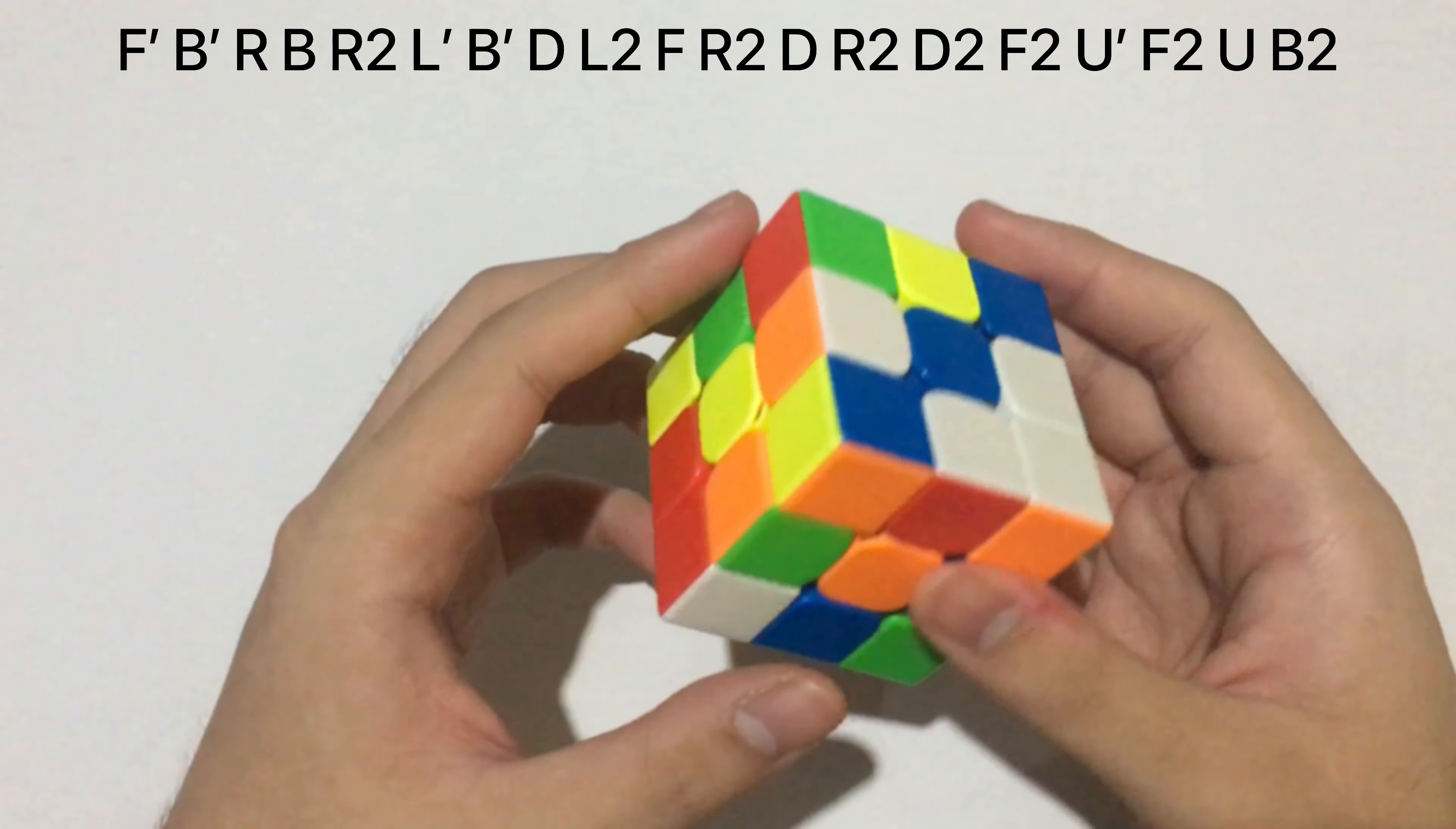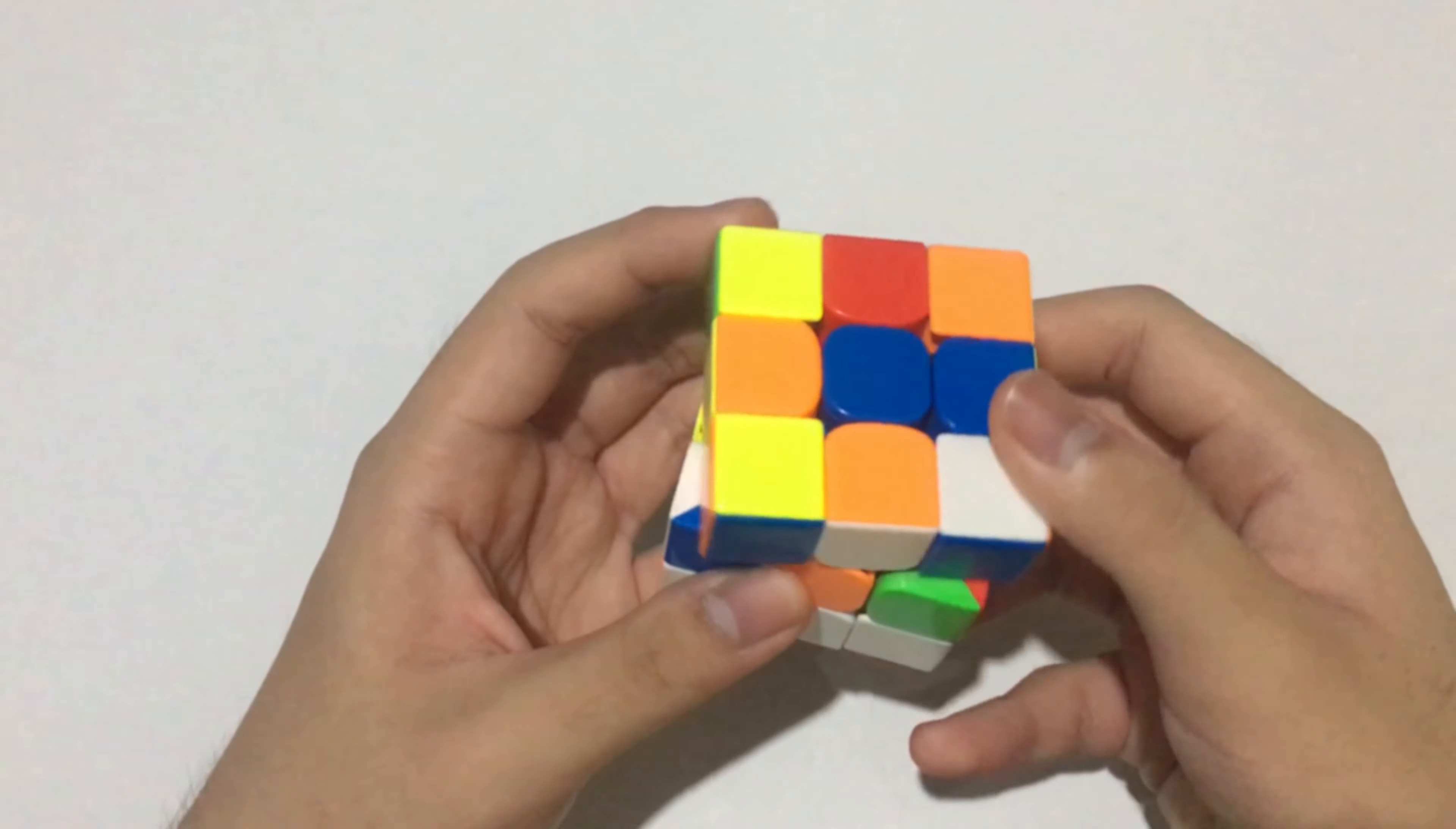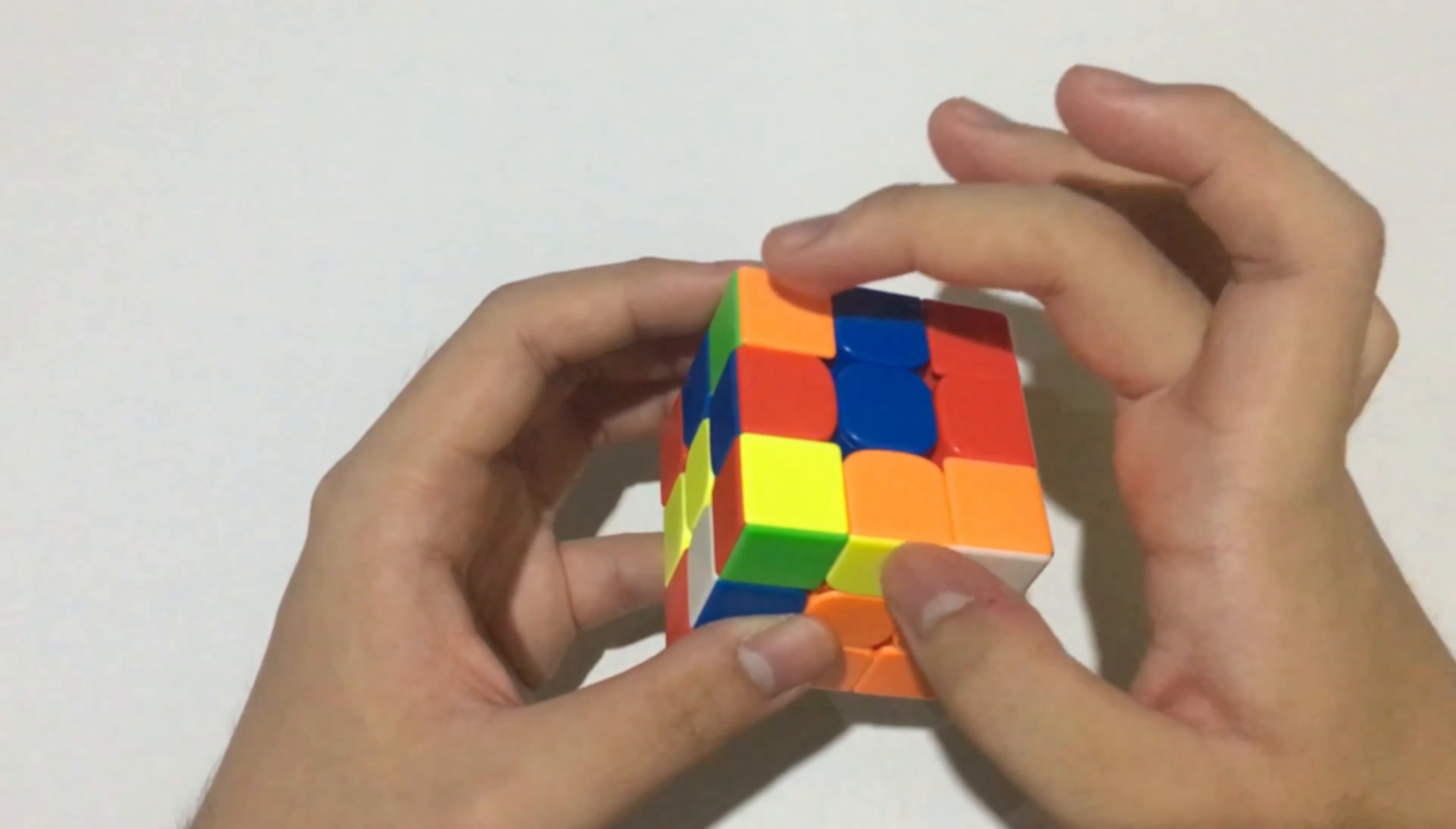I solved these two cross pieces like this, crossed and inserted this block, and went straight into solving this edge. So when I aligned the cross, we formed an X-cross. Then this pair was next.